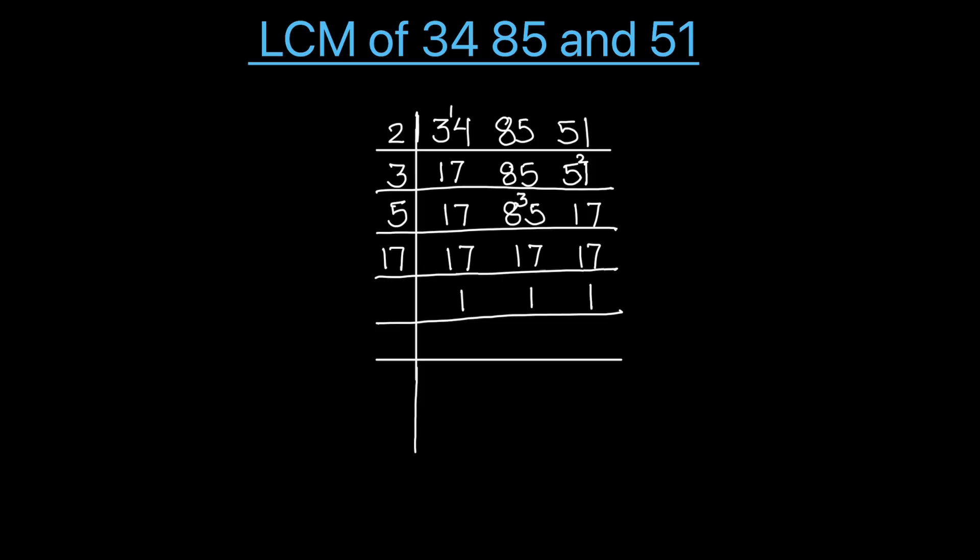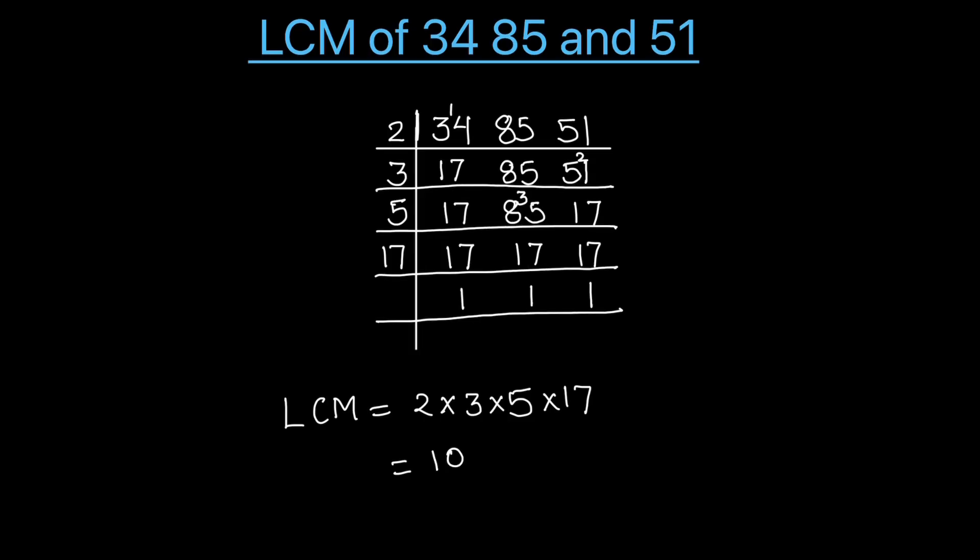So LCM will be 2 times 3 times 5 times 17, which equals 2 times 5 is 10, and 3 times 17 is 51, and 51 times 10 is 510. So the LCM of the three numbers 34, 85, and 51 is 510.